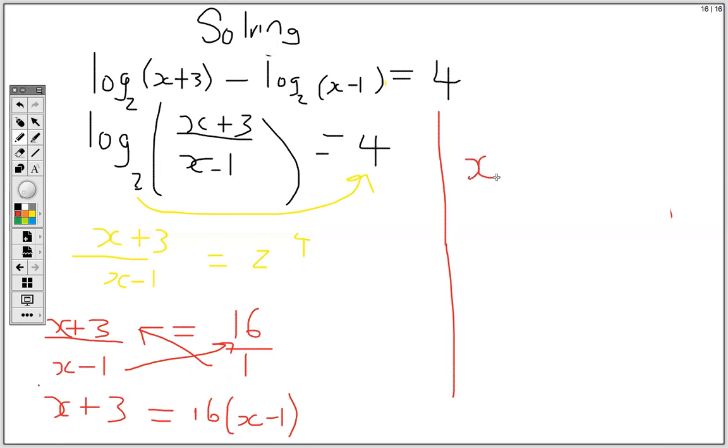So we have x plus 3 equals 16 times x, that's 16x, and 16 times negative 1, that's minus 16. Now we're going to group. So the 3 goes over the equal sign while the 16x goes over the other side. So we have x minus 16x equals negative 16 minus 3. So this is minus 15x equals negative 19.